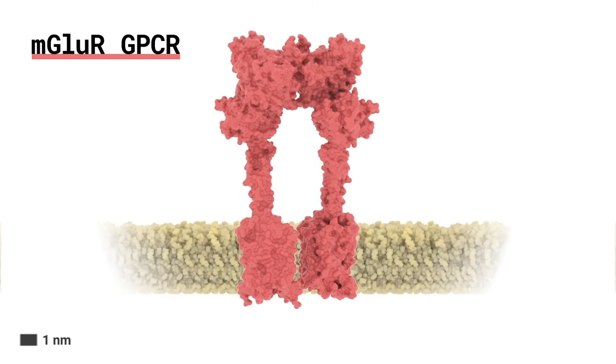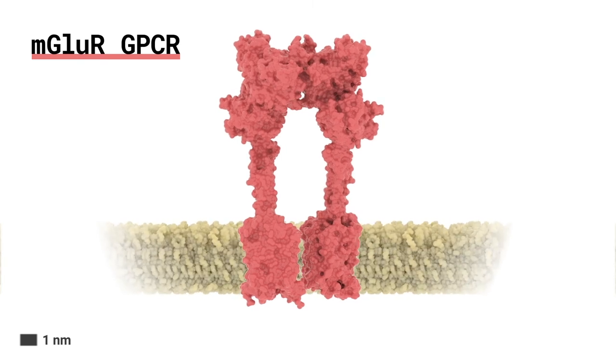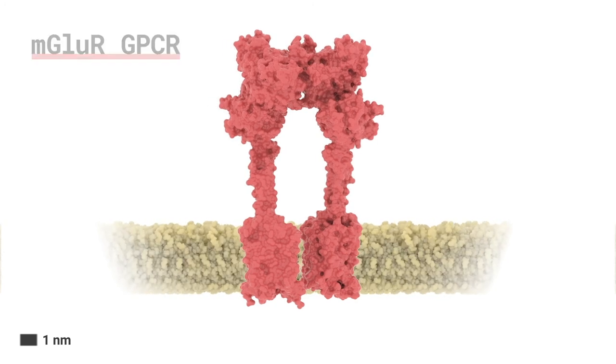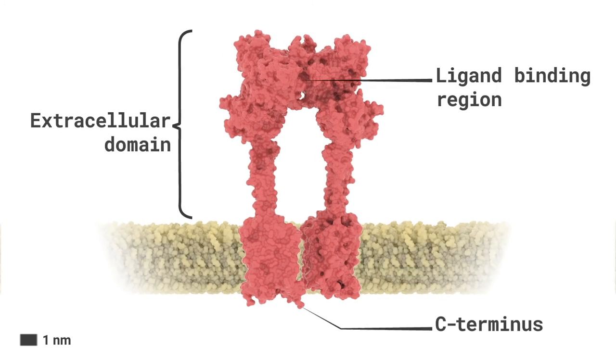Metabotropic glutamate receptors are class C G-protein-coupled receptor membrane proteins, or GPCRs as they are commonly known. They have an extracellular domain with ligand-binding regions, and a transmembrane domain with intracellular C termini.